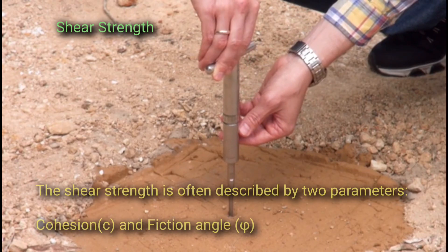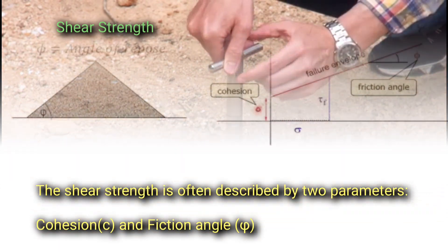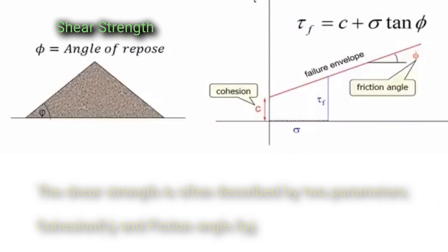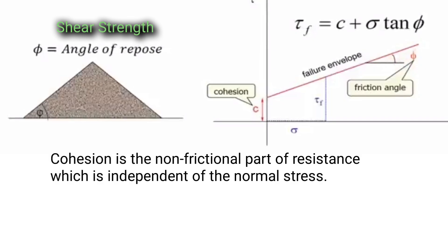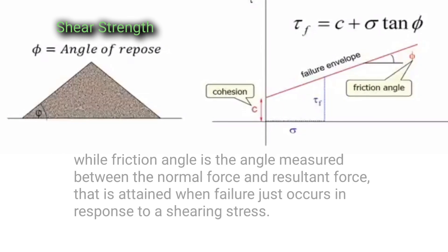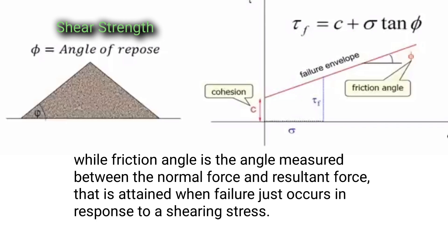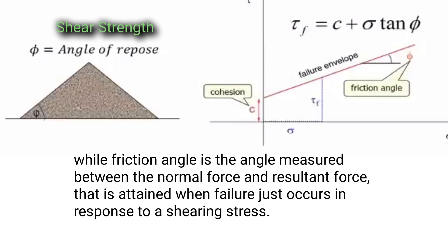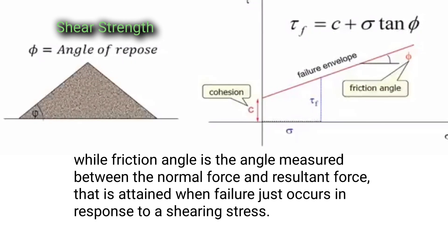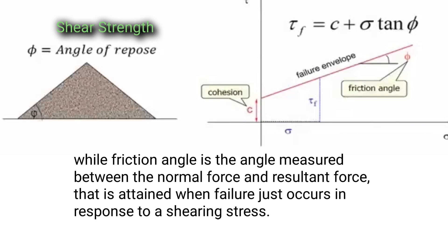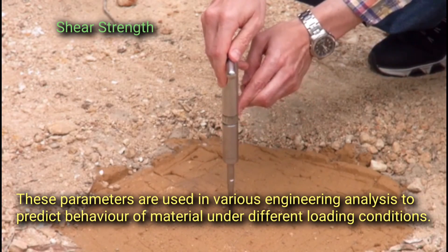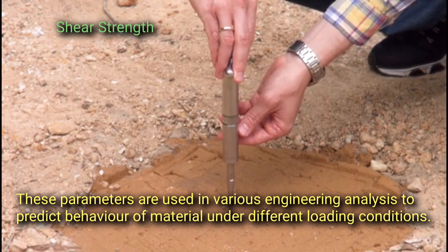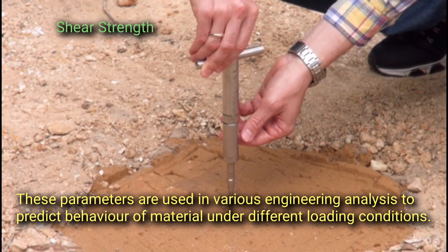The shear strength is often described by two parameters: cohesion and friction angle. Cohesion is the non-frictional part of resistance which is independent of the normal stress, while friction angle is the angle measured between the normal force and resultant force that is attained when failure just occurs in response to a shearing stress. These parameters are used in various engineering analyses to predict the behavior of material under different loading conditions.